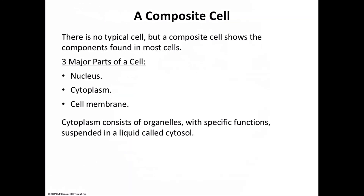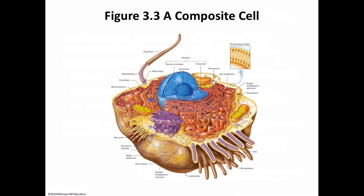There are three major components that make up cells. First is the nucleus — that double-membrane-bound organelle that contains your DNA, your deoxyribonucleic acid. It contains your entire genome, meaning all those A's, T's, G's, and C's that make you who you are — half from your mother and half from your father. Next is the cytoplasm, within which are suspended the organelles and other components. Lastly is the cell membrane, which keeps what's within the cell inside and what's outside the cell outside.